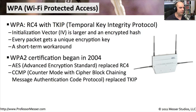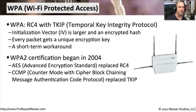Very quickly after WPA came out, we came out with WPA2, which began certification in 2004. The RC4 component was replaced with Advanced Encryption Standard (AES), and something else was added: CCMP — Counter Mode with Cipher Block Chaining Message Authentication Code Protocol. That component replaced TKIP. So we took the whole RC4 and TKIP combination and replaced it with something better and stronger in AES and CCMP.